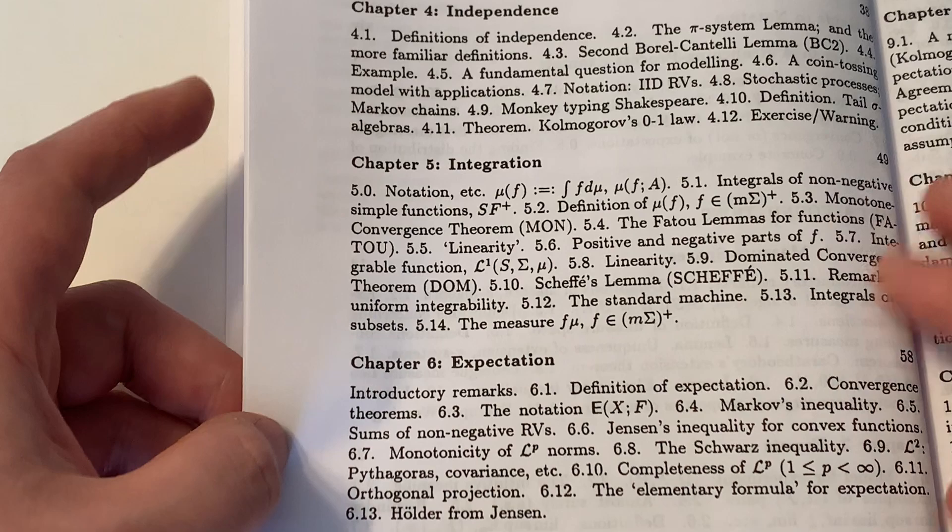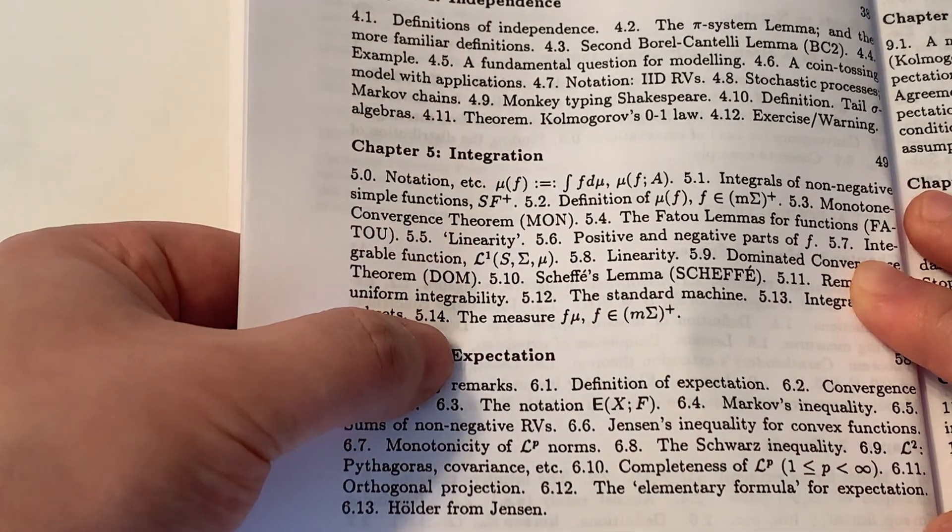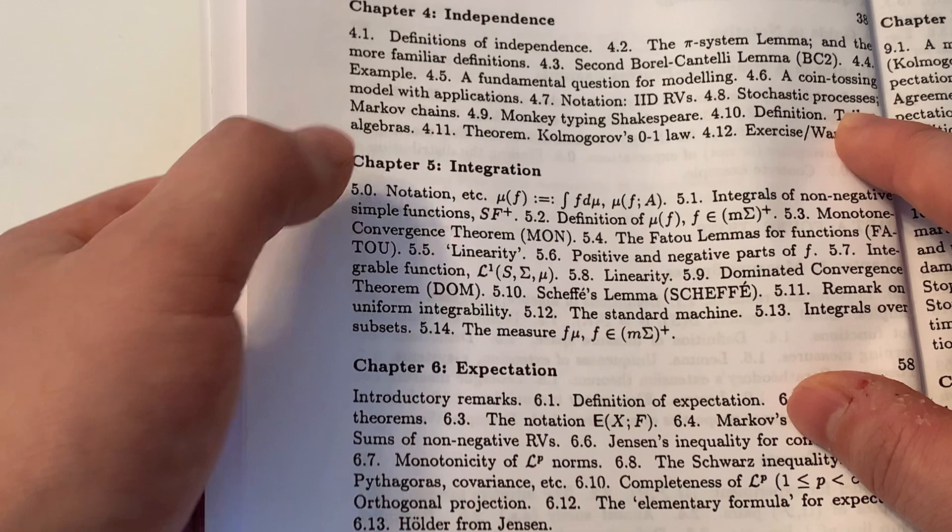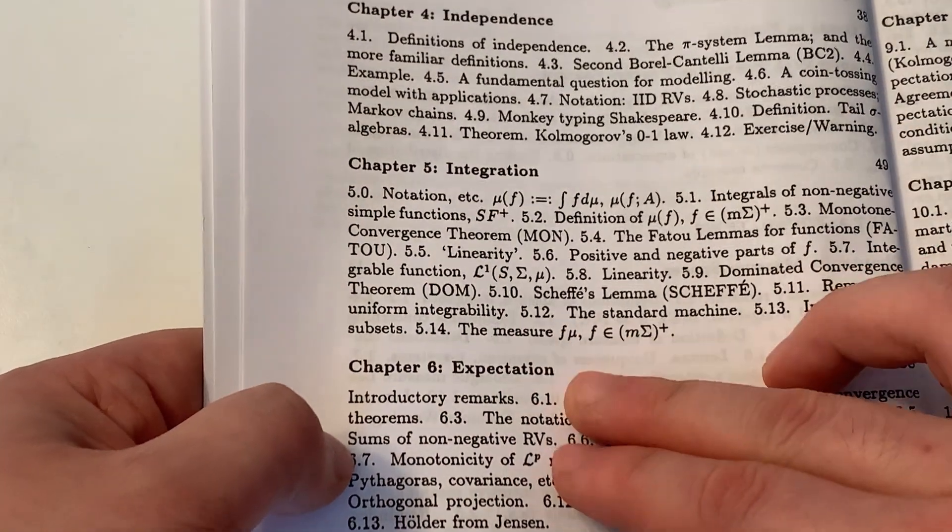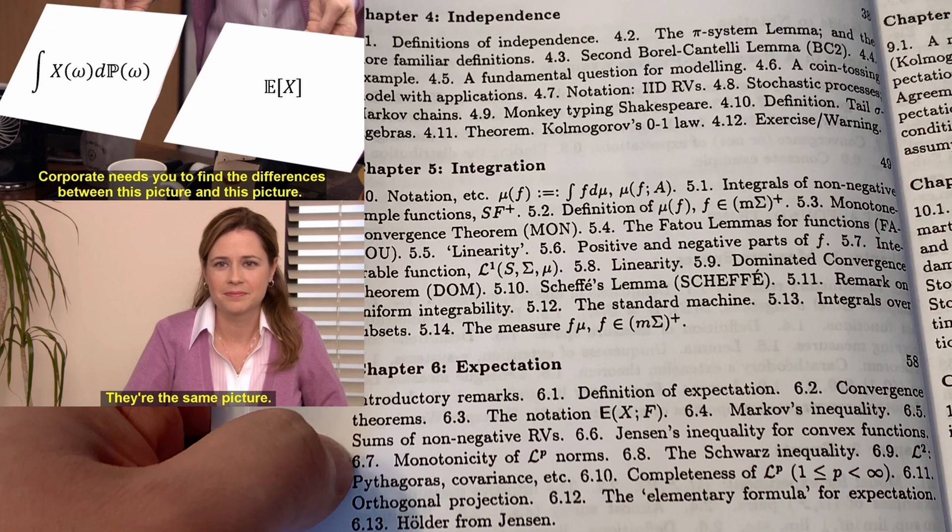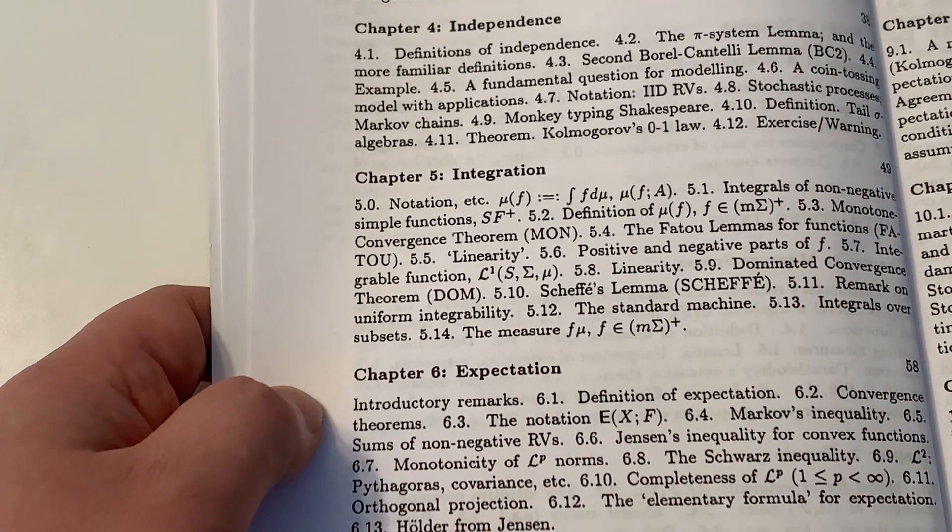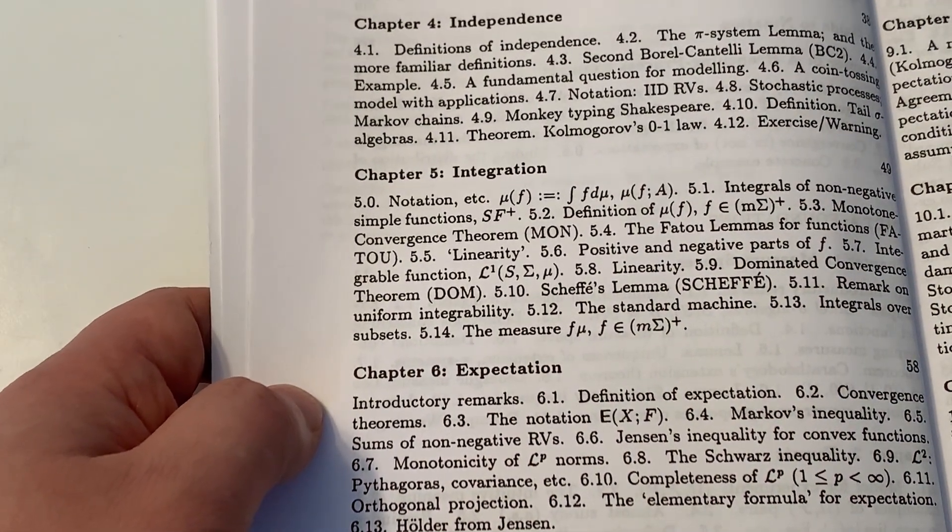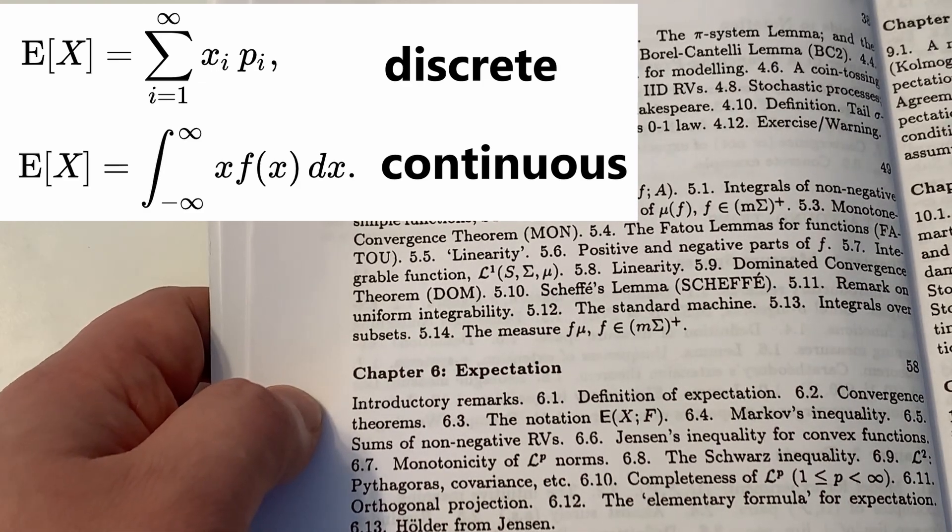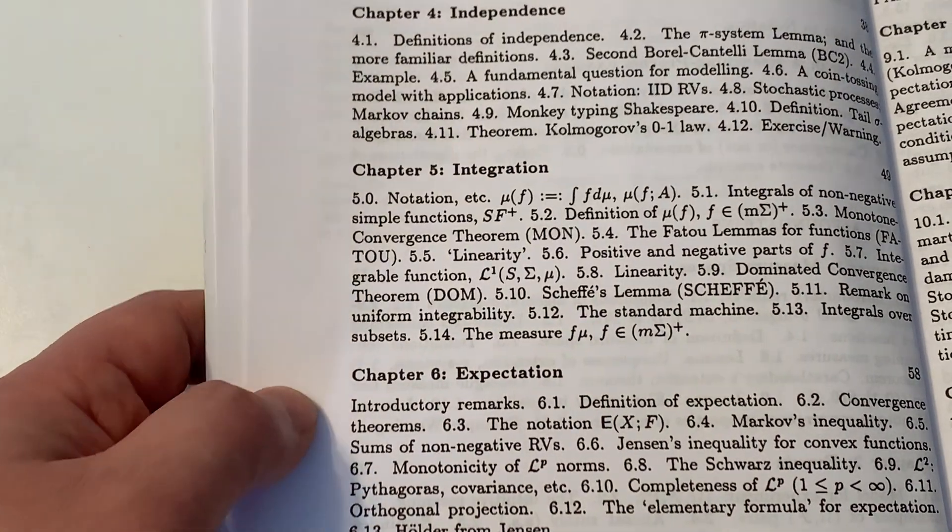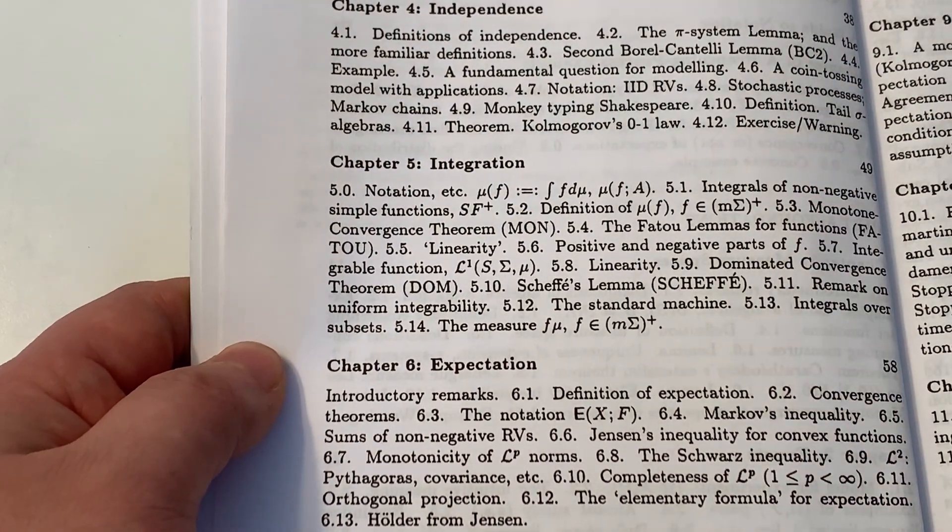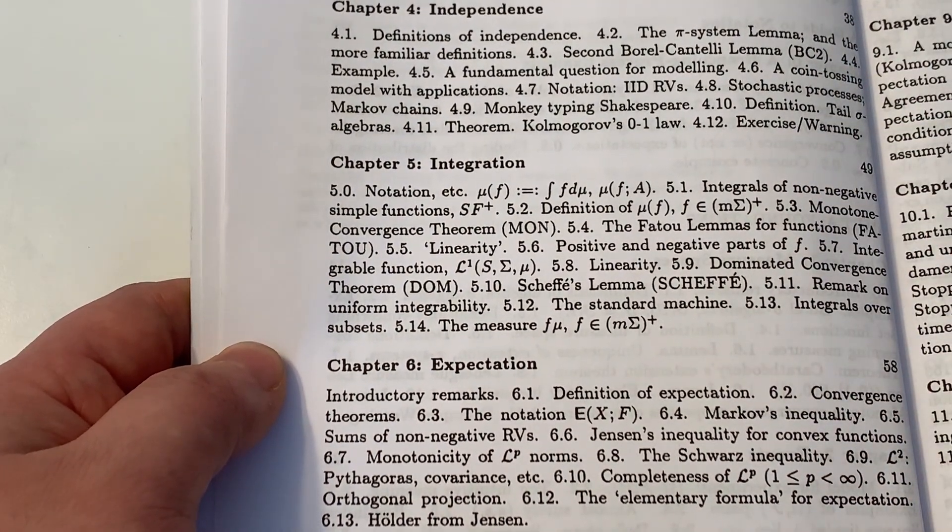Chapter 5 and 6 are about integration and expectation. In pure measure theory, we use the term Lebesgue integration, and in probability theory we use expectation. So there's the same notion mathematically, just different notations. In elementary probability theory, the expectation is often defined separately for discrete versus continuous random variables. There's no need for that. All unified under the same framework. And here we're allowed to talk about random variables that are neither discrete or continuous.